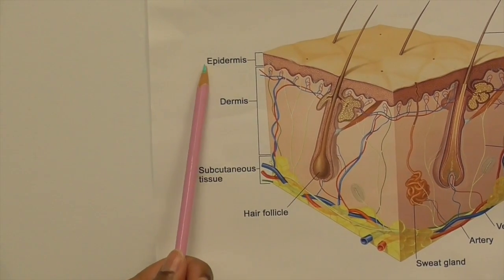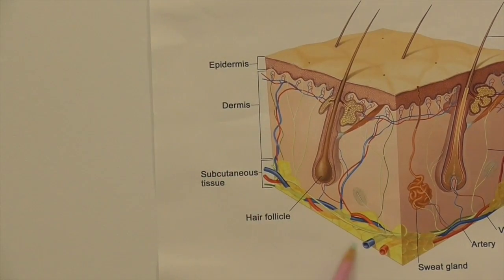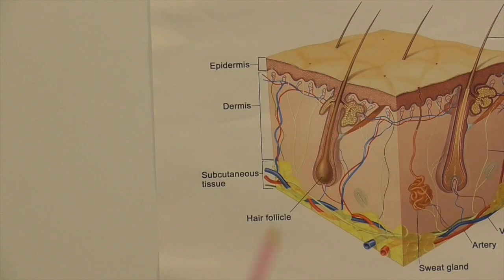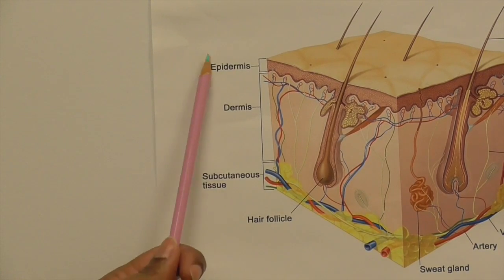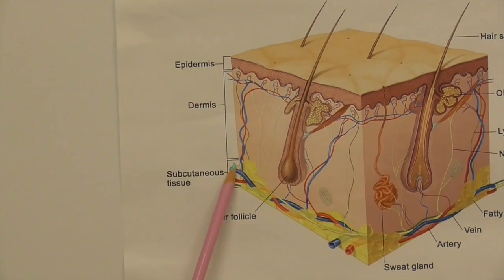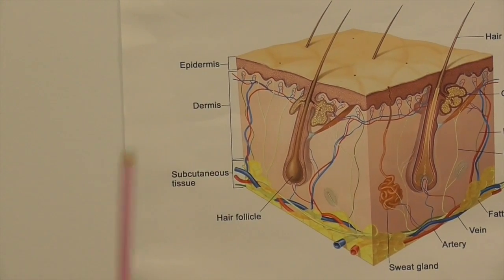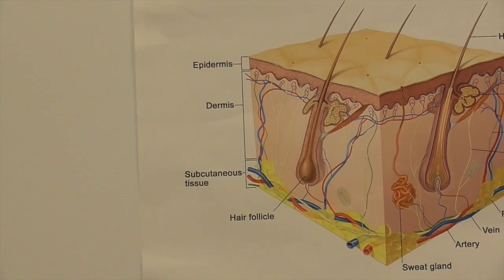If you remove the epidermis and all of the dermis, leaving behind the fat, that's a full thickness skin graft. Epidermis and part of the dermis is a split thickness or partial thickness skin graft.